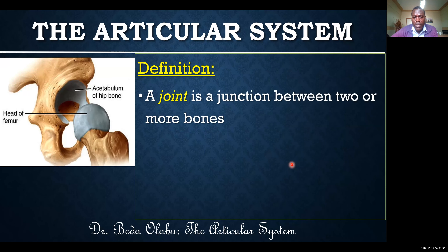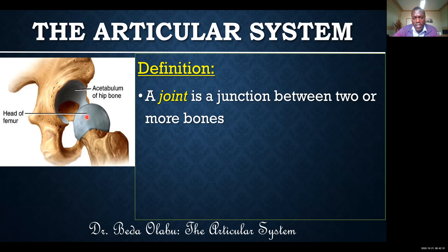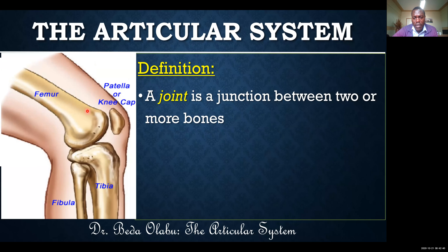By definition, a joint is a junction between two or more bones — understood here in the context of human anatomy. A joint can either be a simple joint or a compound joint. A simple joint has just two bones uniting, as you can see in this image. A compound joint is where there are more than two bones involved. You call it simple if there are two bones, and compound if there are more than two.